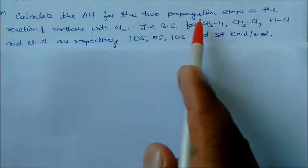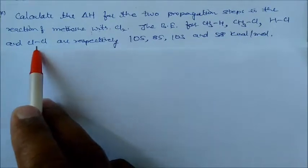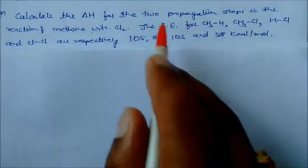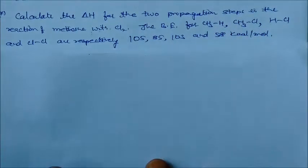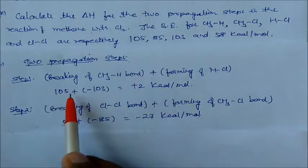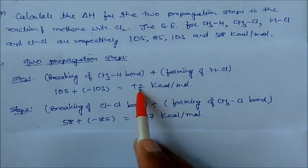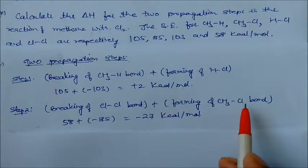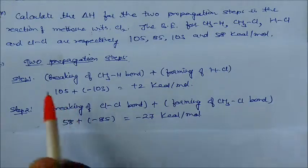Calculate ΔH for the two propagation steps in the reaction of methane with Cl₂, given bond energies: C–H = 105, C–Cl = 85, H–Cl = 103, and Cl–Cl = 58 kcal/mol. Step 1: breaking C–H (105) and forming H–Cl (–103) gives ΔH = +2 kcal/mol. Step 2: breaking Cl–Cl (58) and forming C–Cl (–85) gives ΔH = –27 kcal/mol.